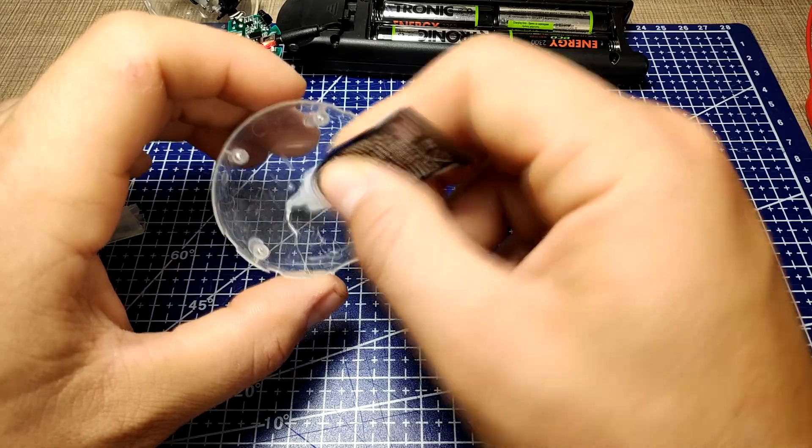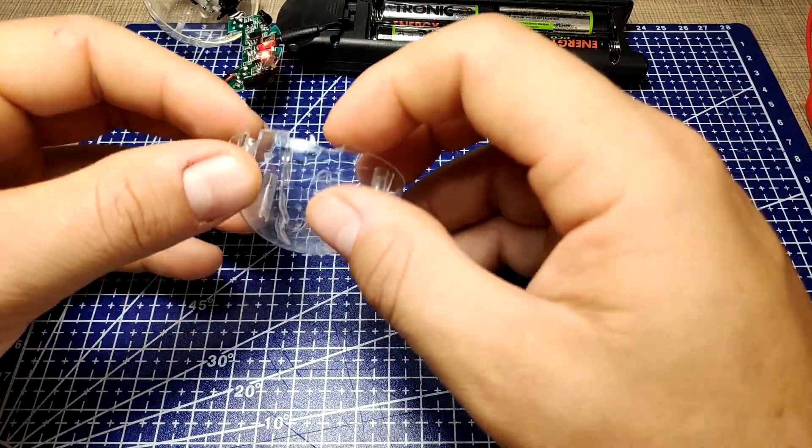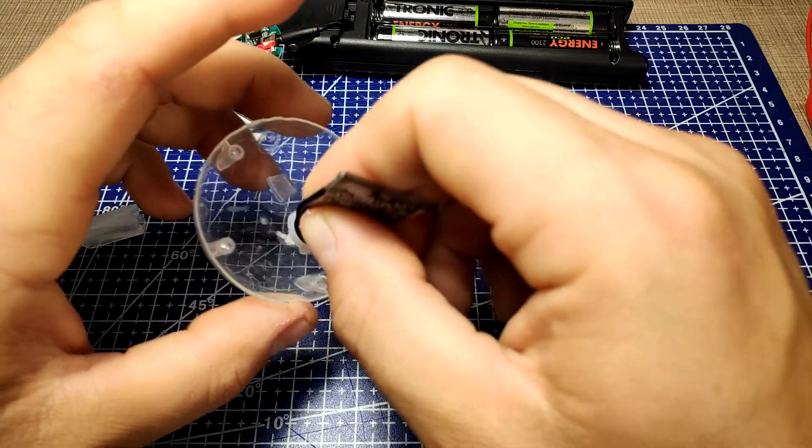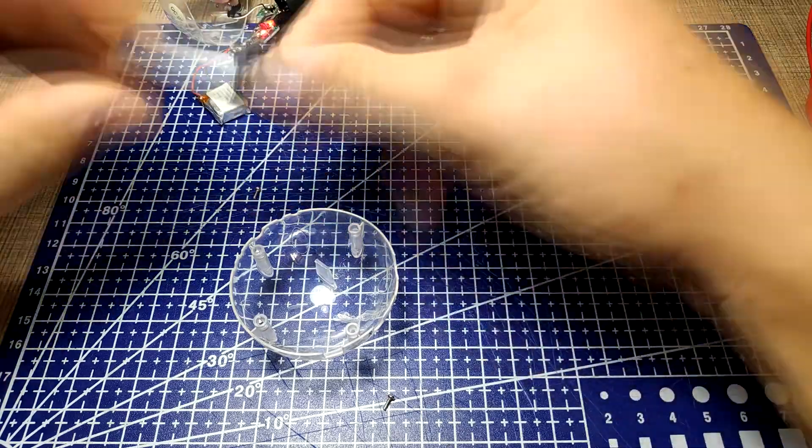Once fixed the charging indicator LED started glowing indicating that the toy is now fixed and we can continue playing with it. Before assembly I used some super glue to fix the cracks on the outer shell and assembled everything back together.